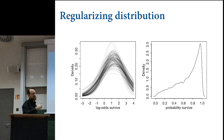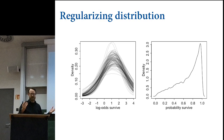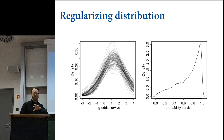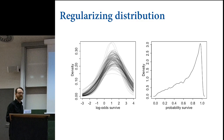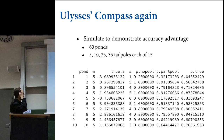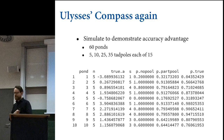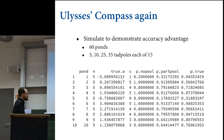We've reached the point where the posterior distribution contains functions, because the parameters in it define distributions. We have a posterior distribution of Gaussian distributions. The argument I'm making is that varying effects are better because they give you better predictions out of sample. To show you that, I have to fake some data—make some imaginary tadpoles and kill them. All the simulation code is in the book, Chapter 12.